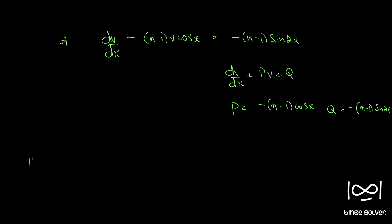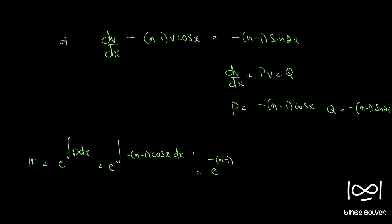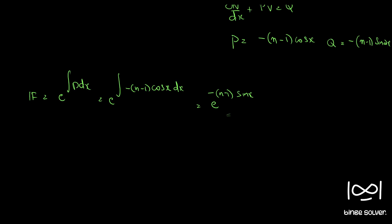The integrating factor in such questions is given by e raised to the integral of p dx. So e raised to the integral of minus (n minus 1) cos(x) dx, which equals e raised to minus (n minus 1) times sin(x), since the integral of cos(x) is sin(x).